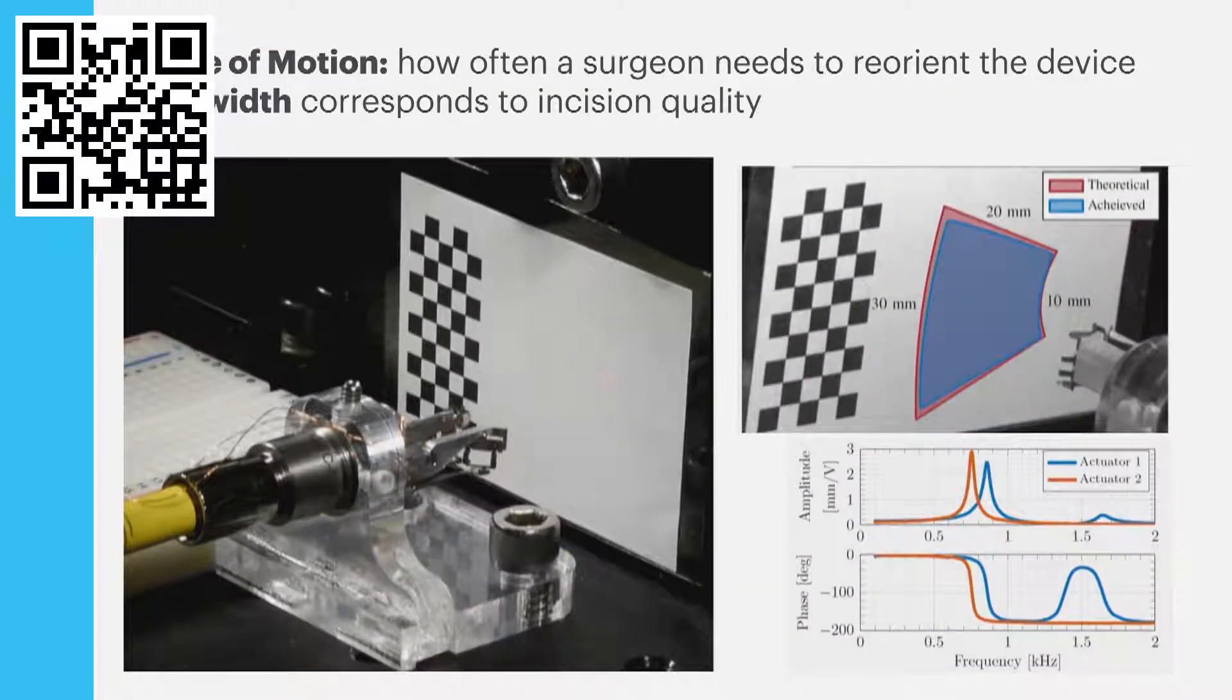We really care about the range of motion and the bandwidth. The range of motion corresponds to the size of lesion and how often the surgeon needs to reorient the device. Each axis has plus or minus 12 degrees of motion. At a 20 millimeter standoff that corresponds to this nice large range of motion. We also have quite high bandwidth on the order of 500 hertz, resonant frequencies of 750 and 850 hertz for these two axes.